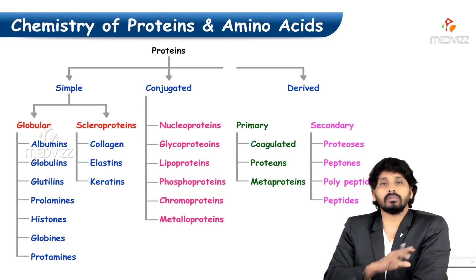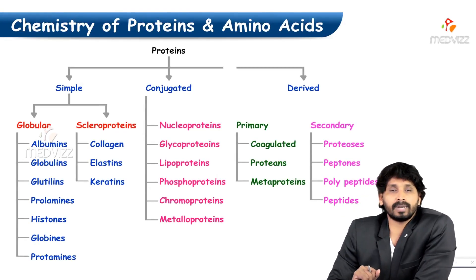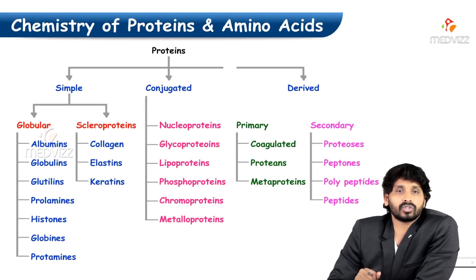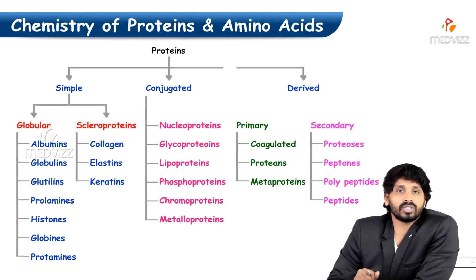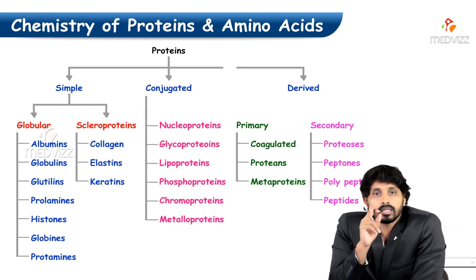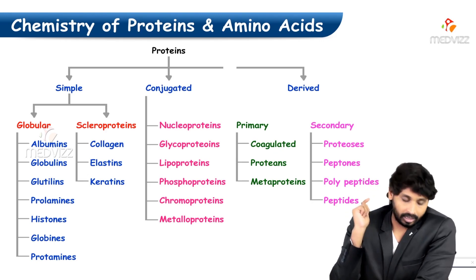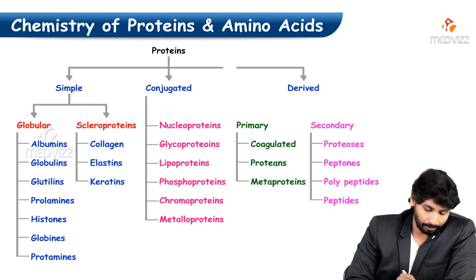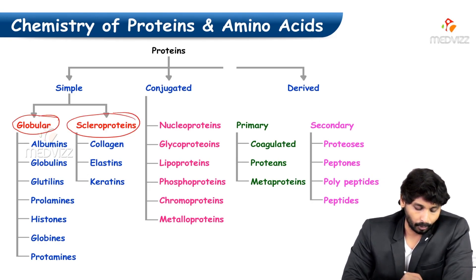This is the overall classification of proteins based on chemical nature. You see here simple proteins, conjugated proteins, and derived proteins. Simple proteins are again classified into two types: globular and scleroproteins.